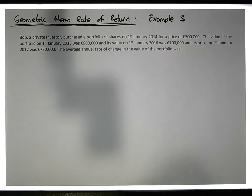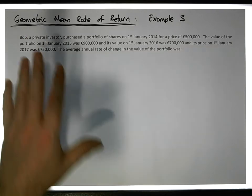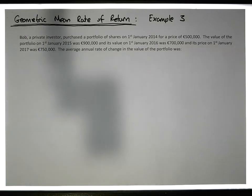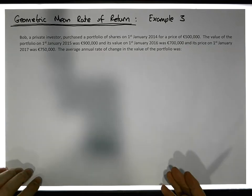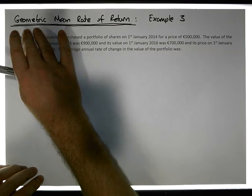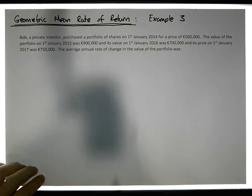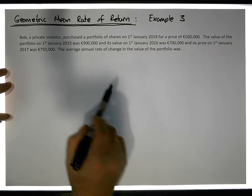In a previous video, we've actually had a look at the relationship between the arithmetic mean, the geometric mean, and the geometric mean rate of return. But when we're dealing with financial data where we have returns and they can be positive and negative, the most appropriate average measure is the geometric mean, and in particular, the geometric mean rate of return — so that's the most appropriate.